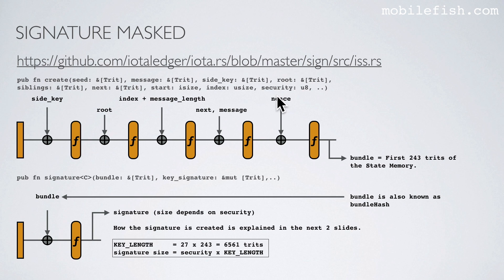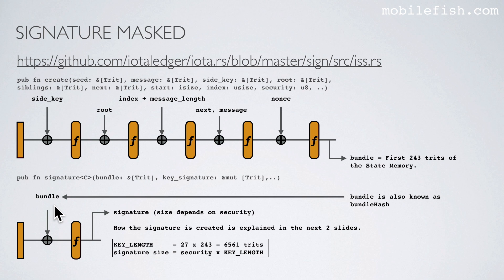Previously we calculated the nonce. Now the same nonce is absorbed in the sponge construction and a transformation function is applied. After the transformation function is applied, we take the first 243 trites of the state memory. This value is called the bundle, also known as the bundle hash. The signature is calculated in this file in the signature function. To calculate the signature, the bundle is absorbed and the transformation function is applied. This function generates the signature. The signature size is the security level times 6,561 trites. How the signature is created inside this transformation function will be explained in the next two slides.